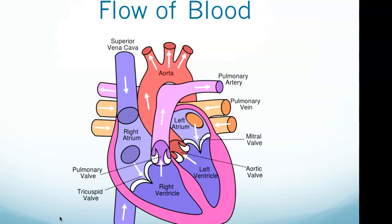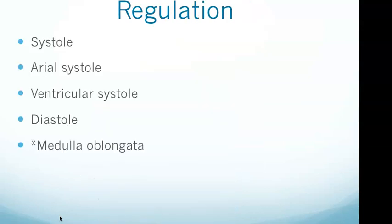Finally, blood returns to the left atrium by way of the pulmonary vein. This process may need to be heard a few times to memorize. The arrows in the diagram show exactly the flow of blood, and this can easily be questioned on the exam.